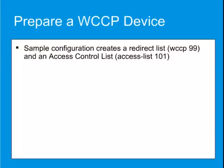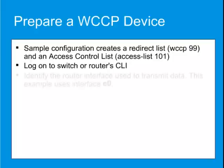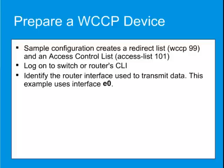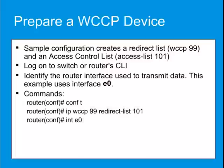First, log on to your switch or router's command line interface, using SSH or Telnet as appropriate. Identify the router interface that will be used to transmit data to and from the ProxySG appliance. This example uses interface E0. Now enter the commands shown to configure WCCP and create an associated ACL.